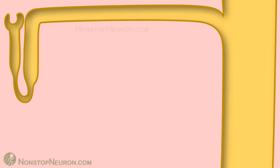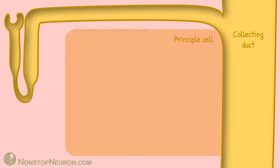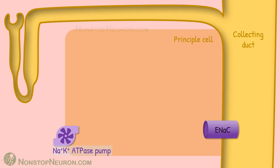First, relevant physiology of tubular processing at the collecting duct. This is the nephron. This is the collecting duct. This is the principal cell. This is the sodium potassium ATPase pump at the basolateral membrane. And here we have the sodium channel and potassium channel at the apical membrane.